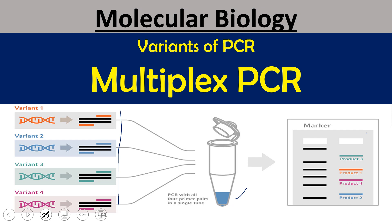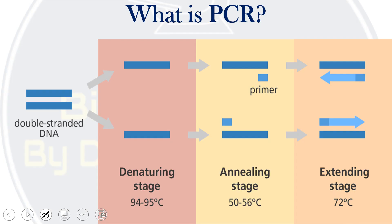Multiplex PCR is a variant of PCR and a widespread molecular biology technique for amplification of multiple targets in a single PCR experiment. You run only one PCR experiment where multiple different targets can be amplified. More than one target sequence can be amplified using multiple different types of primers for every sequence. This is an extension of conventional PCR and has many different uses in research and other purposes.